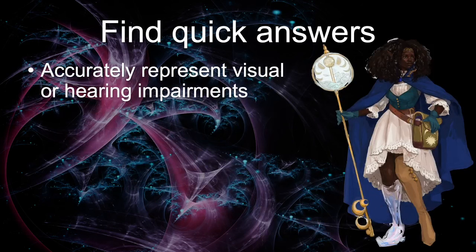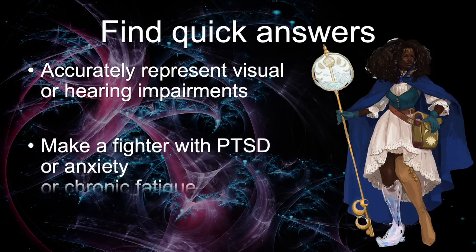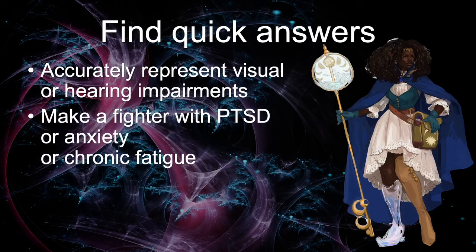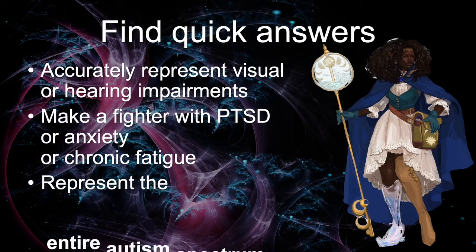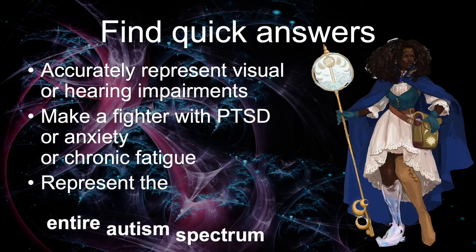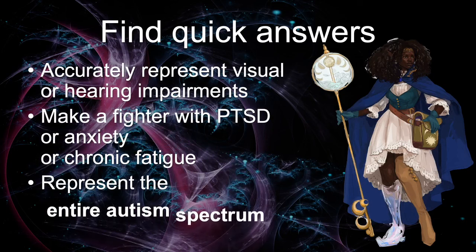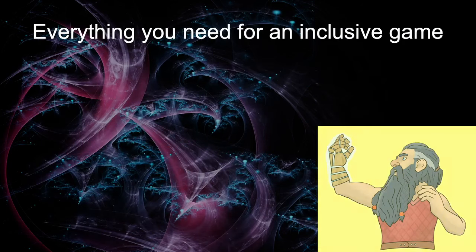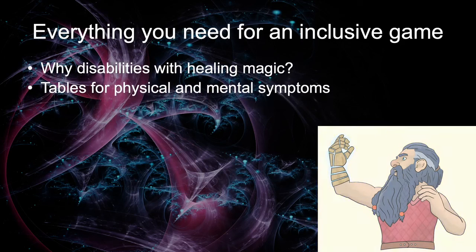Here you find quick answers like: what about spellcasters that have speech impediments or amputation with somatic components? What about emotional disability and a barbarian's rage? You can accurately represent visual or hearing impairments, make a fighter with PTSD or anxiety or chronic fatigue, and represent the entire autism spectrum.